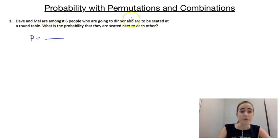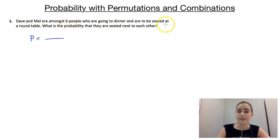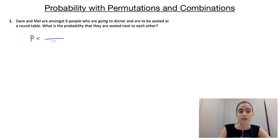When we're seating people in a circle, it's going to be one less factorial than if we were arranging them in a straight line. So if we were arranging six people in a straight line, there are six factorial different ways we could do that. But because we're arranging them in a circle, it's only going to be five factorial.